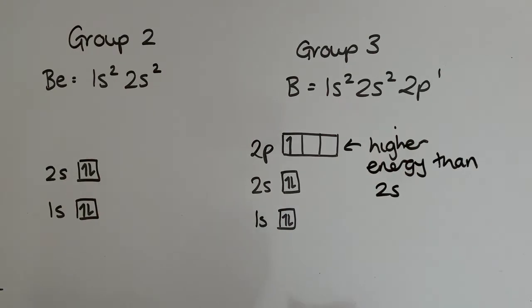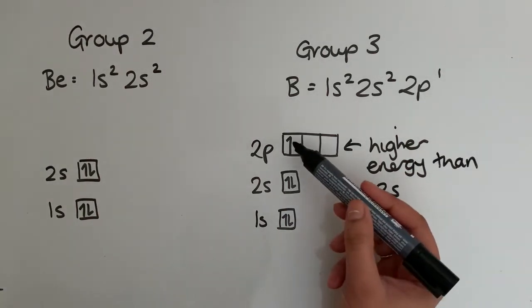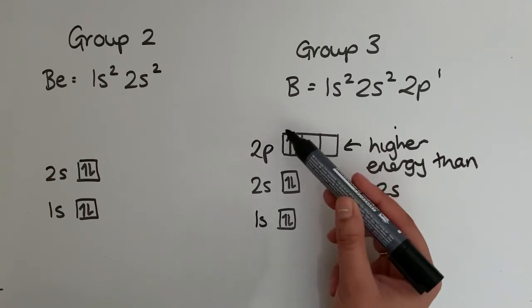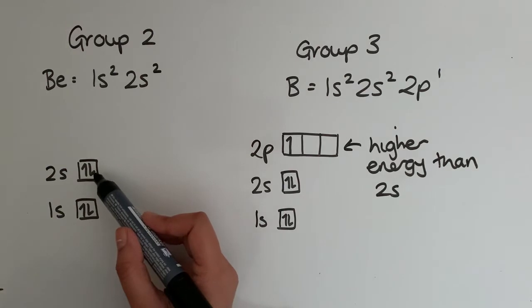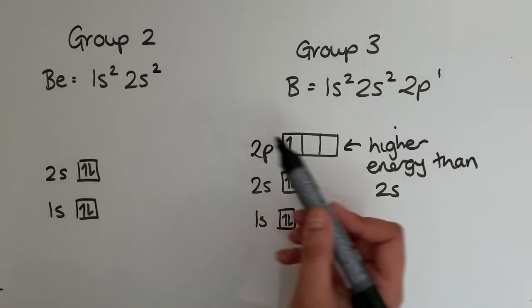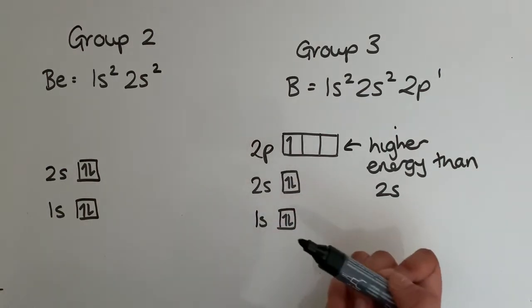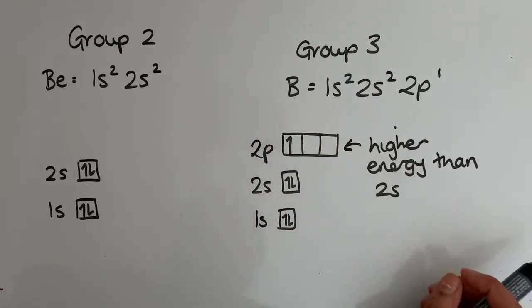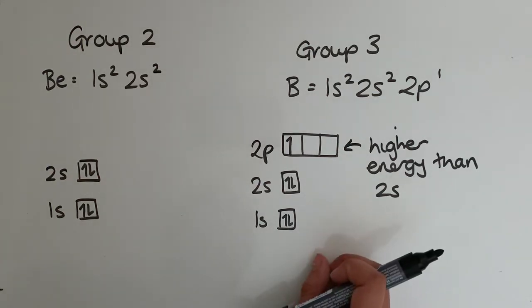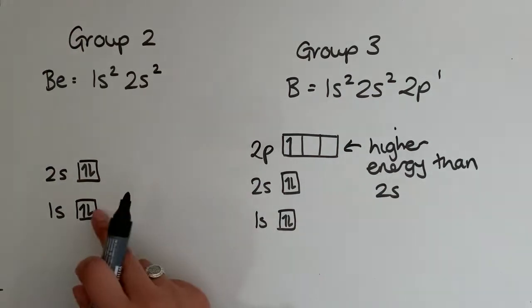So when it comes to removing the electron for boron, the outermost electron is this one here. Because it's a higher energy than the corresponding 2s in beryllium, this requires less energy to remove than the 2s electron. And that's why you have that dip in ionization energy going from group 2 to group 3.